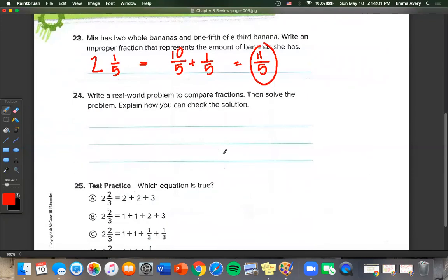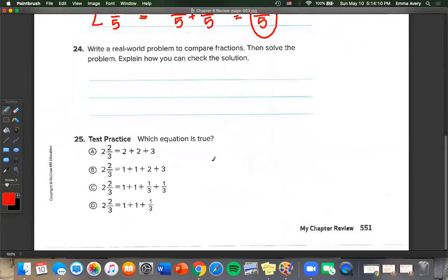I'm going to leave number 24 to you where you write a real world problem to compare fractions. Now test practice. Which equation is true? We're looking for 2 and 2 thirds. I know that's going to be 1 plus 1 plus our unit fraction of 1 third plus another 1 third because we have 2 thirds. So which one matches up? Our answer is C. And that is the end of chapter 8.